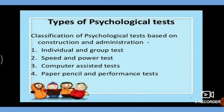Speed and power tests: The difference between these two types of tests is the time allotted for completion. Speed tests have a fixed time limit, and every person being tested must start and stop at the same time.